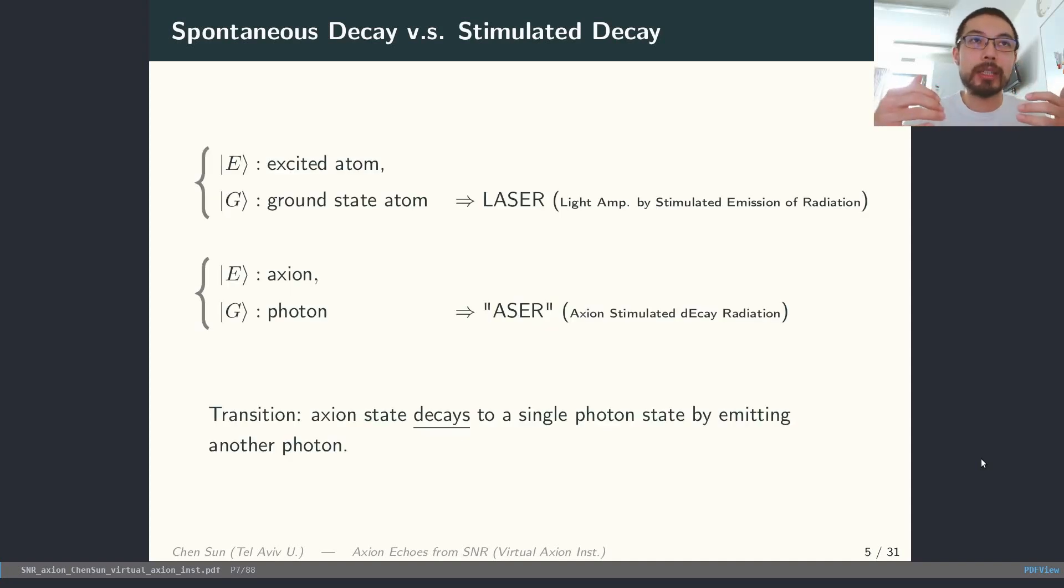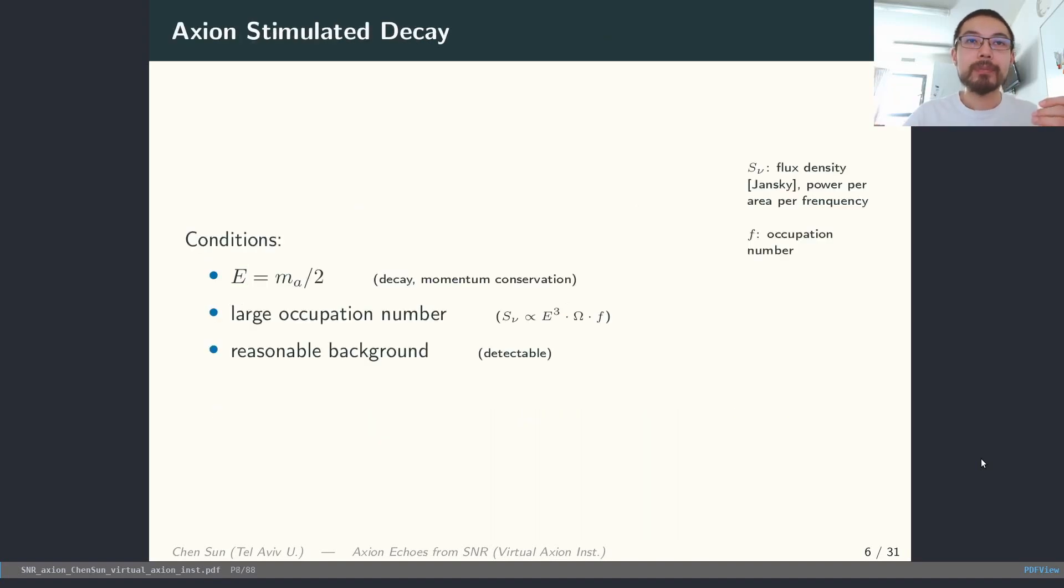But it doesn't have to be just a two-level atomic system. It could be some other two-level systems with a finite transition rate, for example, axions. We can view the axion decay as the transition from an excited state, here the axion state, to the photon state by emitting an extra photon. This process can be enhanced when there is an ambient photon bath with the right energy. Let's look at the conditions for this to happen. If we want the axions to be able to decay at rest yet get Bose-enhanced, we want the energy of the photon to be half of the axion rest mass.